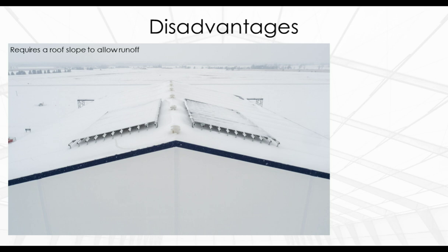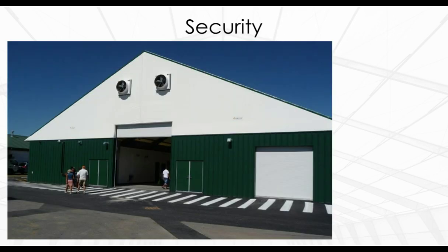The disadvantages of fabric structures include that they are not available with a flat roof profile. Fabric buildings require a roof slope to allow snow and precipitation to run off, with at least a 2-to-12 slope generally required. Snow mitigation devices like ice breakers and gutters are available. Security can also be a concern, as fabric can be cut with a knife. Security systems, motion detectors, floodlights, fenced compounds, and steel, concrete, or brick veneer walls are effective measures building owners can use as additional security.